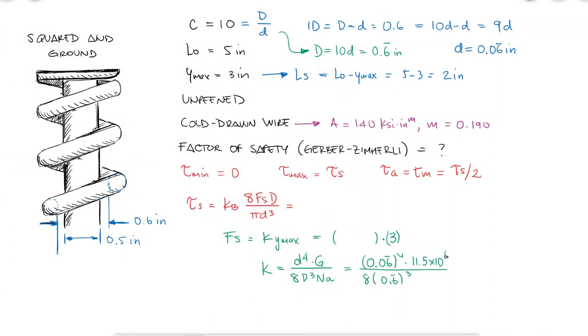If the solid length is equal to the number of total coils times the diameter for a squared and ground spring, and for that type of spring, the number of active coils is 2 fewer than the total number of coils. Since the top and the bottom coil are not resisting the compression...